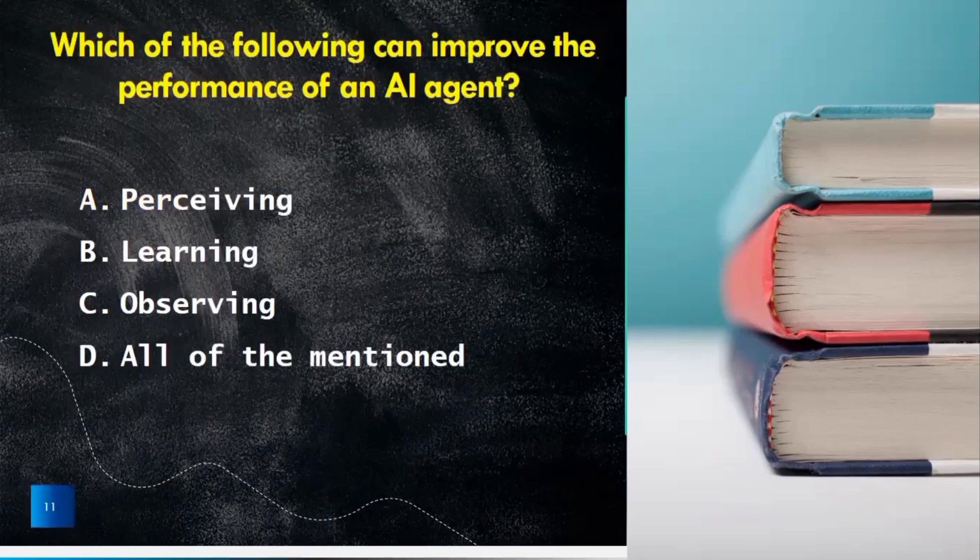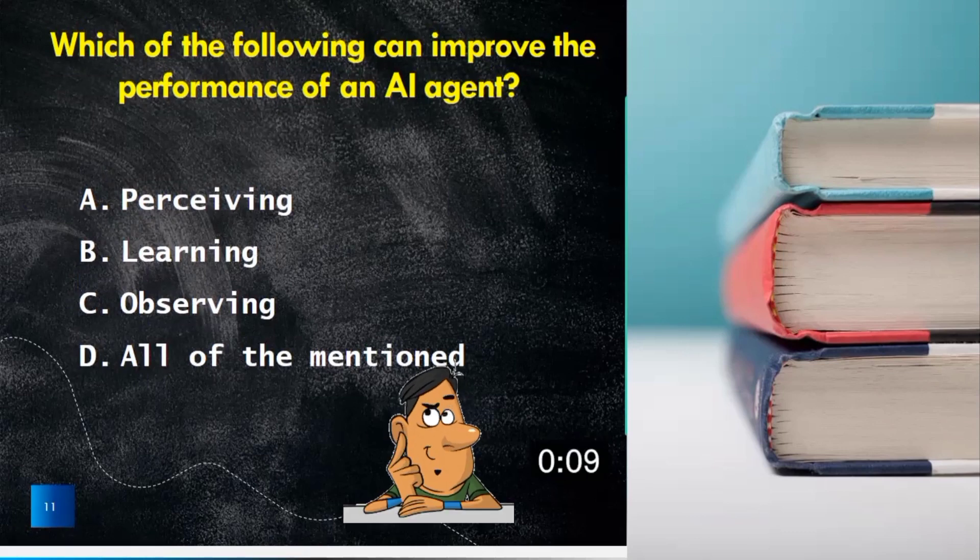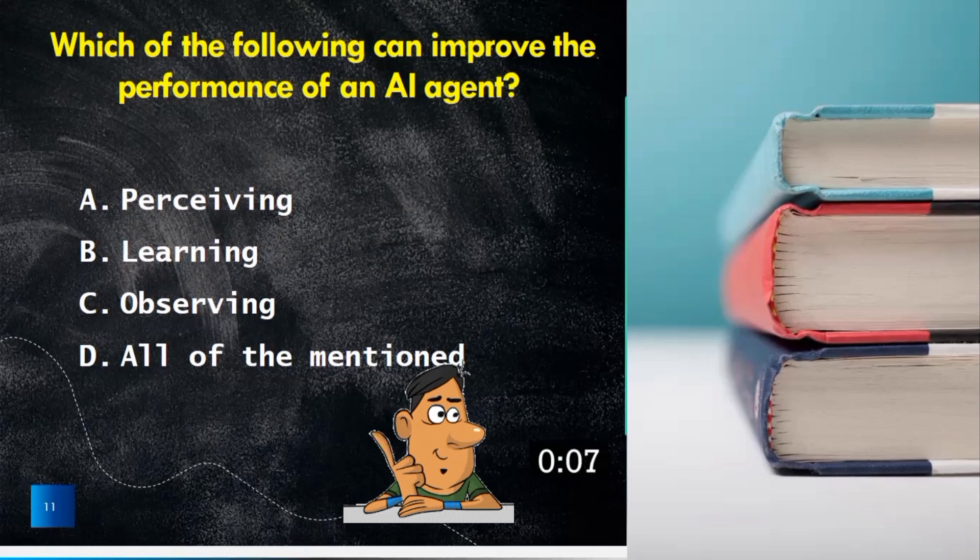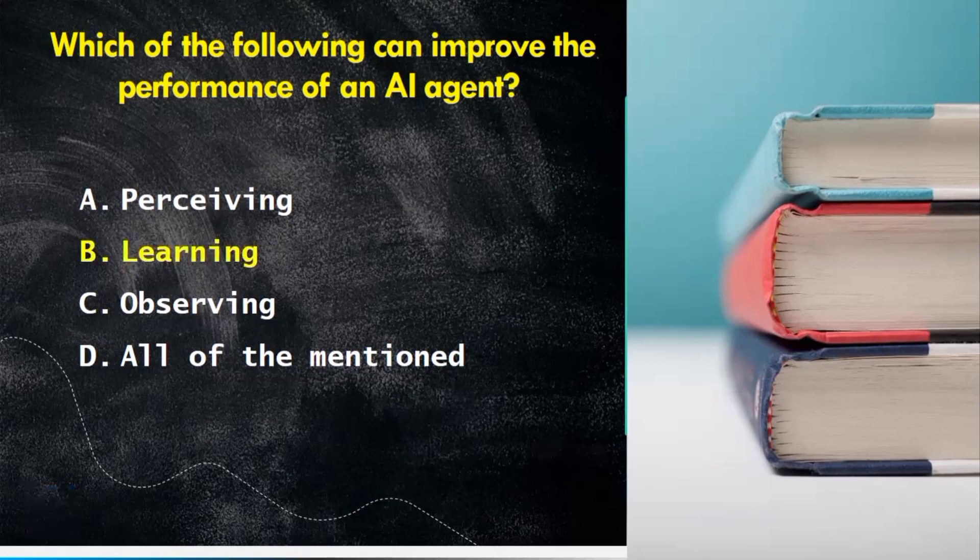Another question is which of the following can improve the performance of an AI agent? Perceiving, learning, observing or all of the mentioned above? The true answer is learning.